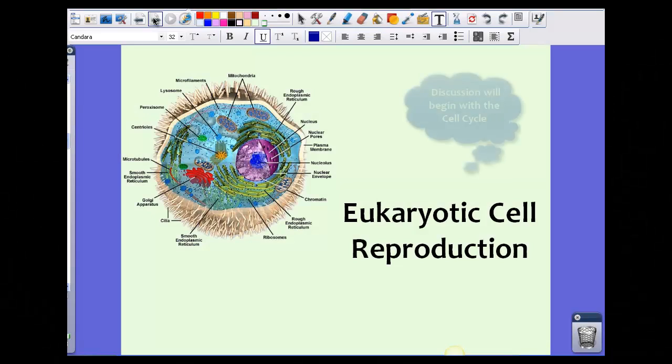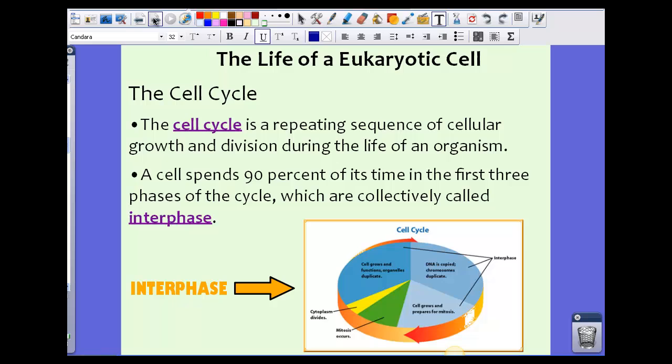Now let's talk about eukaryotic cell reproduction, and specifically we're going to begin our discussion with the cell cycle. So the life of a eukaryotic cell actually doesn't spend most of its time in a reproductive state. The cell cycle is a repeating sequence of cellular growth and division during the life of an organism.